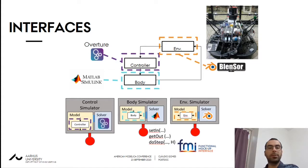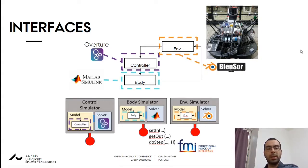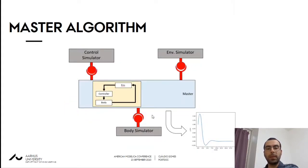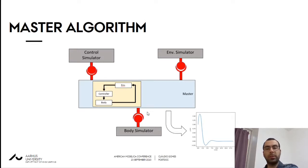I'm not going to go over the details of the standard here, but there are a few important functions that each tool must implement: setting an input, getting an output, and doing a step. With these functions implemented in every tool, a master algorithm knows how the tools have to be connected, and it will use these functions to communicate with each tool and invoke the get, set, and do-step operations.